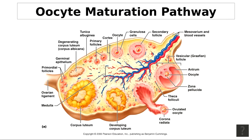Just like the male testis, the ovary has similar coverings. The first is the germinal epithelium on the surface — simple cuboidal epithelium that covers the ovary. Right below that is the tunica albuginea, a capsule of collagenous connective tissue below the germinal epithelium. This appears as a little white line going all the way around the ovary.